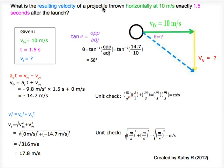What is the resulting velocity of a projectile thrown horizontally at 10 meters per second exactly 1.5 seconds after the launch? Each clue is highlighted in different colors, and the information of each clue is shown in the same color.